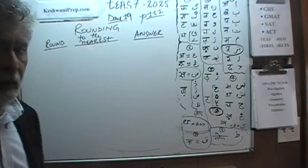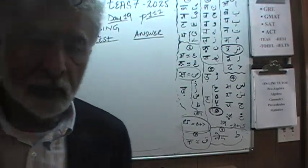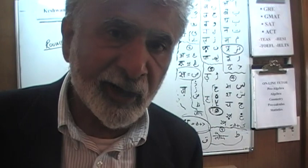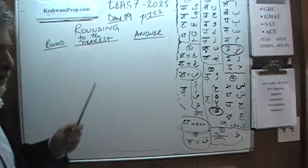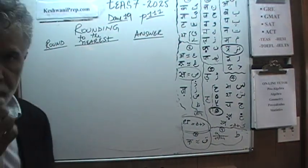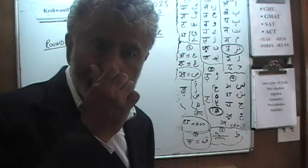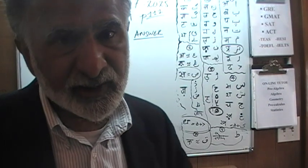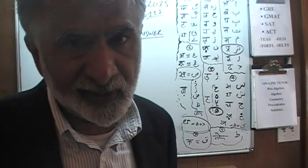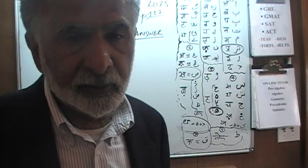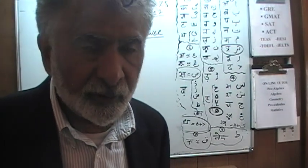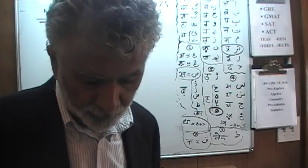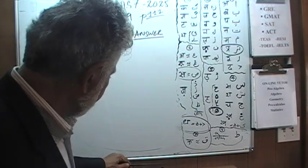Today is our lesson number 19 and today we will discuss the concept of rounding. How do we round numbers to a given decimal place? Whichever decimal place the question is asking us, what does it involve in the rounding? Let's take a look at it.